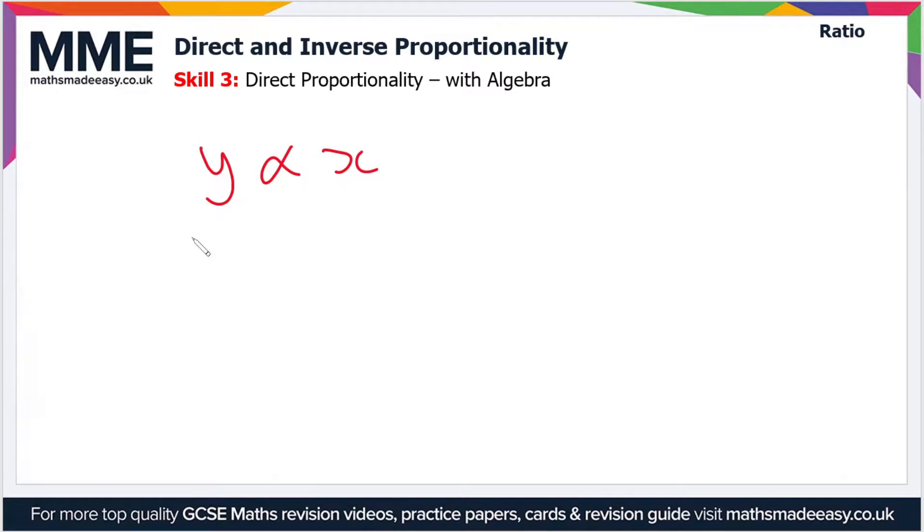This expression reads as: y is directly proportional to x. The alpha symbol means 'is directly proportional to.' But what we can do is replace this alpha symbol to set up an equation. So we can say that y equals kx.